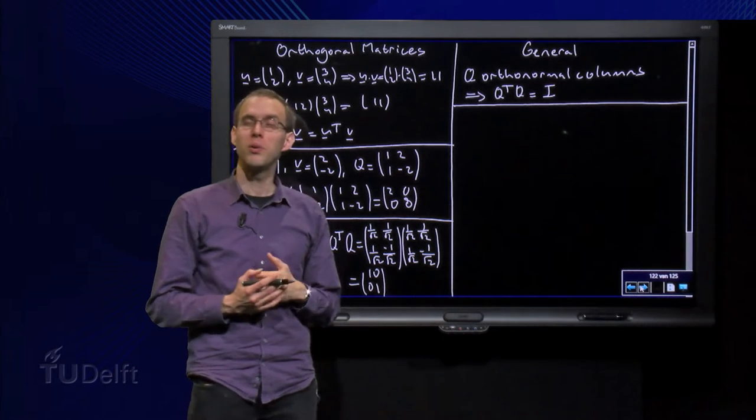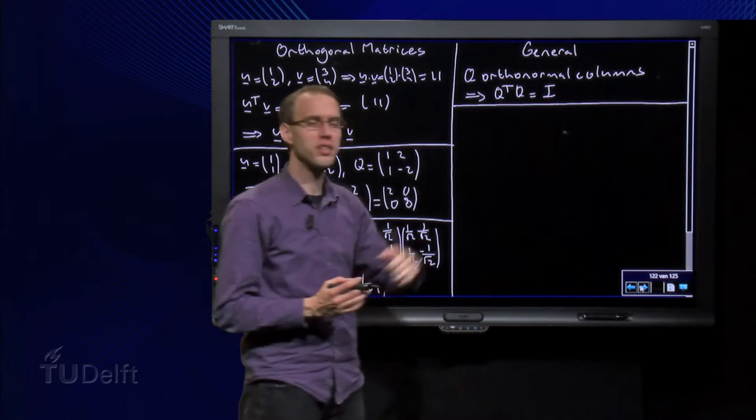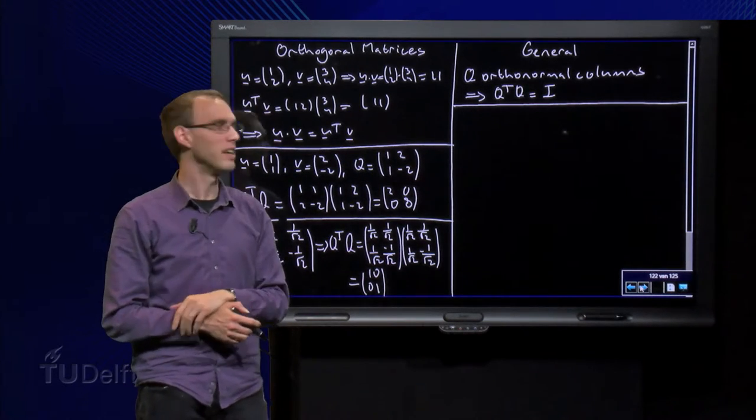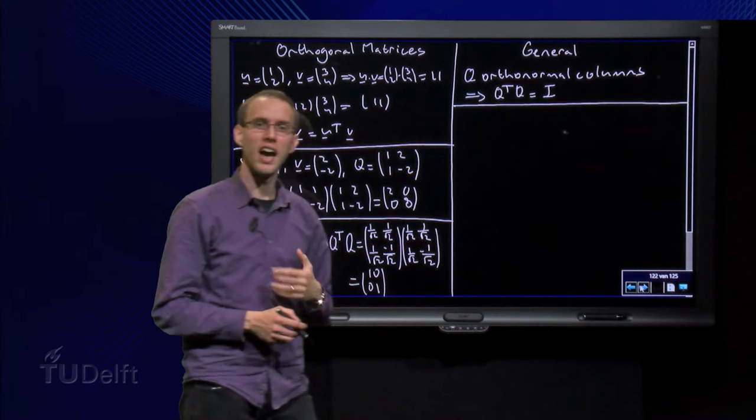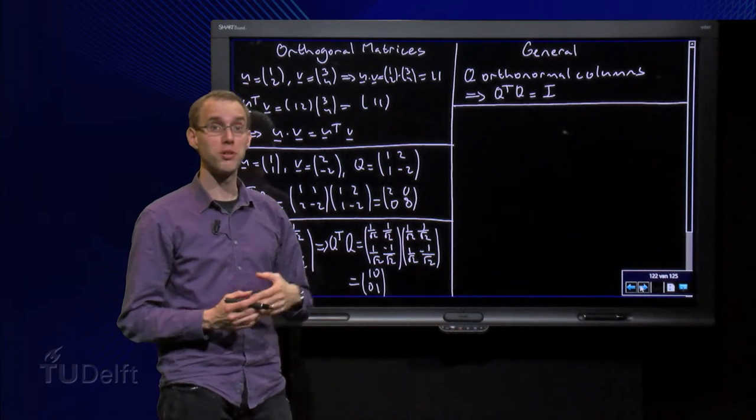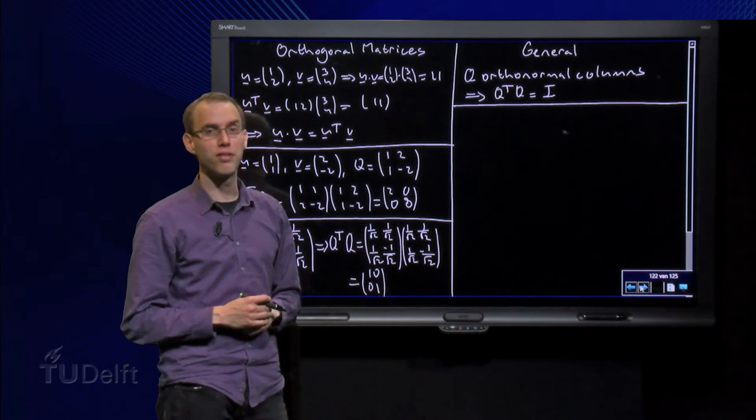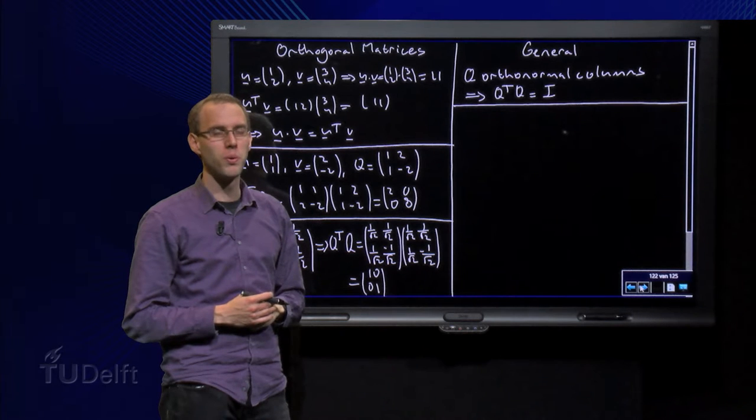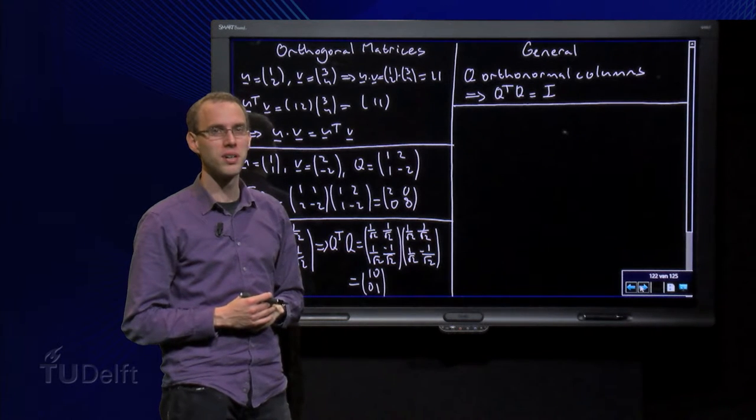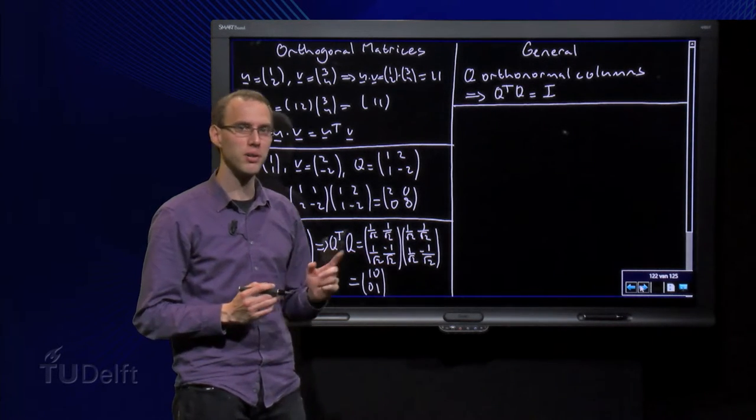And then you think, well, if Q transpose times Q yields the identity matrix, do we always have then, in that case, that Q transpose is automatically the inverse of Q. Think for a moment. Careful here, look at the next example.